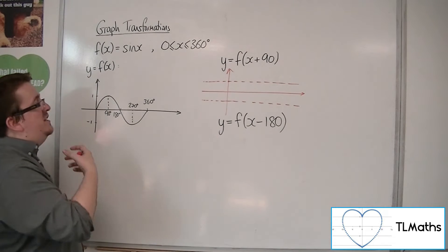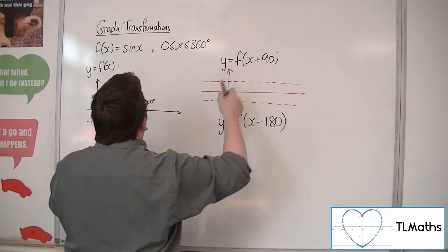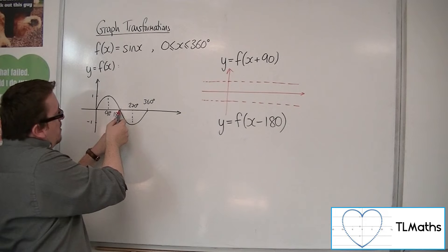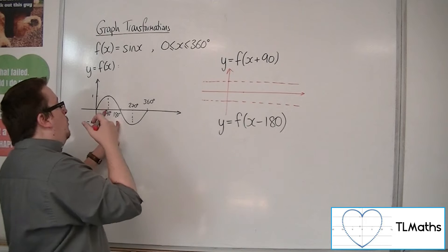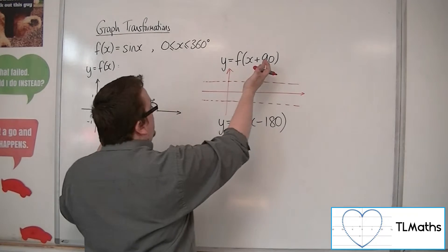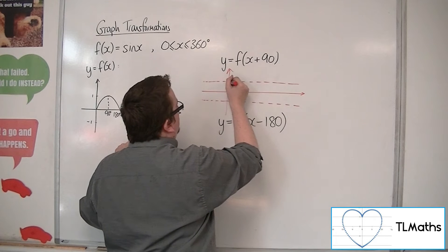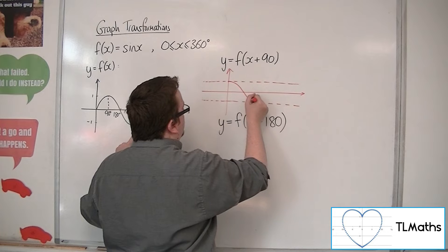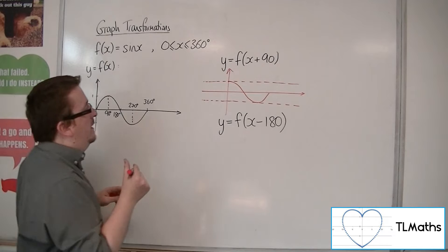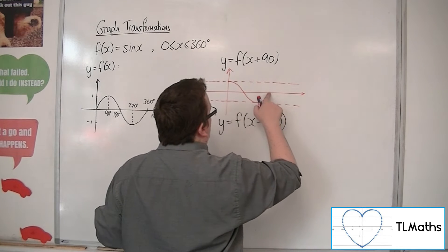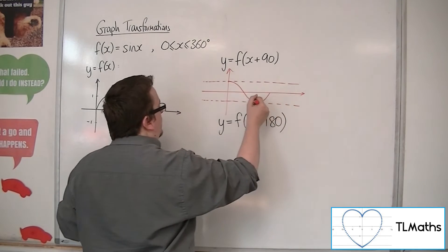When I put in x is 90 into this, I get f of 180. But I know that f of 180 is 0. And when I put in x is 180 into this, I get f of 270, which I know is minus 1. So from this I can see that the curve would be looking something like this — so something like this.